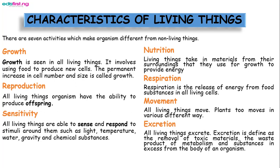The fifth characteristic is growth, which is seen in all living things. It involves using food to produce new cells. The permanent increase in cell number and size is called growth. The sixth is reproduction — all living organisms have the ability to reproduce and produce young ones. The last characteristic is sensitivity: living things simply respond to stimuli such as light, temperature, water, gravity, or chemical substances.